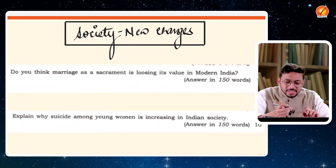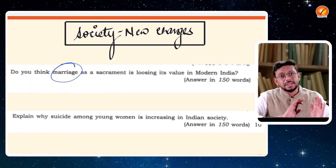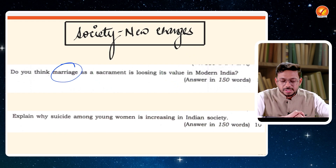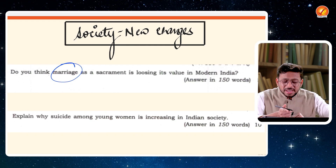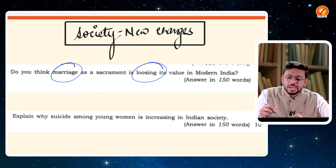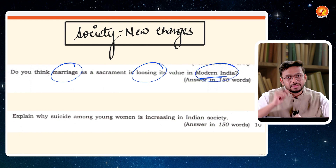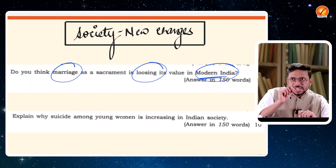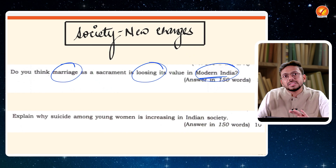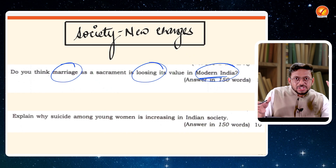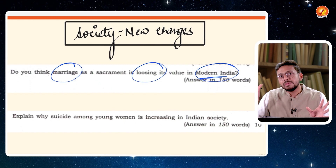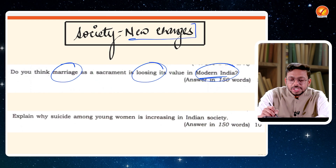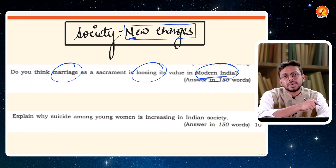Another example: marriage. It's a static concept you see in the GS1 society syllabus. But the question asks — do you think marriage as a sacrament is losing its value in modern India, given the rising divorce rate? That is current affairs. The question asks whether marriage as an institution is losing its relevance in modern India, inter-relating the static topic with modern current affairs. Whenever some new change is happening in society, that is how you identify which question will become important.